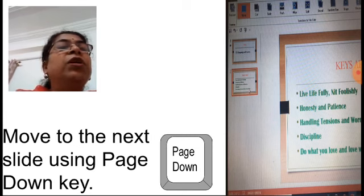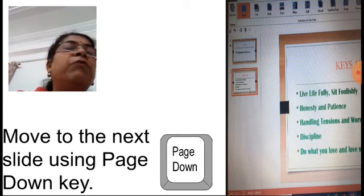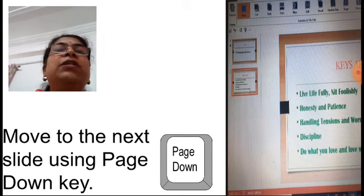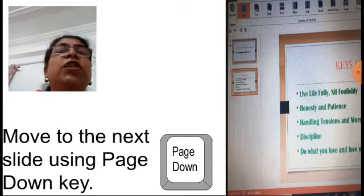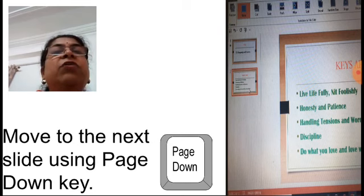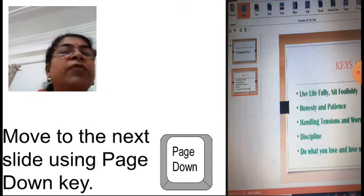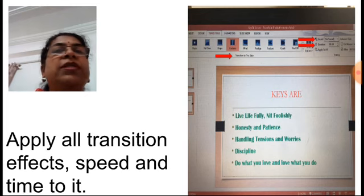All this we have applied for the first slide. Now click Page Down and apply the same settings for the second slide. You can apply the effect for the second slide first and then use Page Up to apply it to the first slide — the order doesn't matter. For both slides you have to apply transition effects, speed, and time.